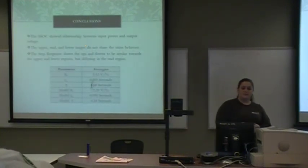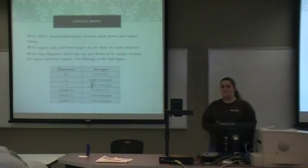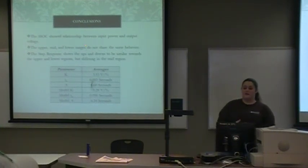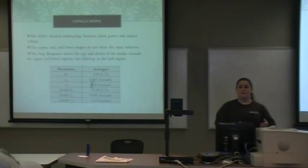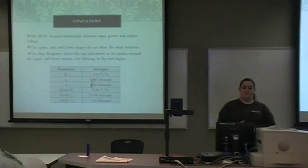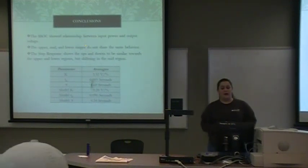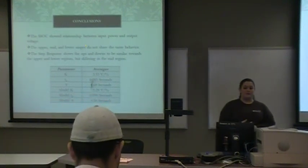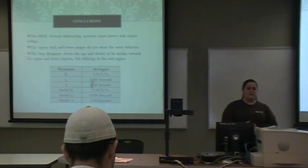In conclusion, the SSOC showed the relationship between power input and voltage output, with upper, middle, and lower ranges that do not share the same behavior. The step response shows up and down steps that are similar within regions but different in the middle range. The experimental average K was 0.35 volts per percent input, TD was 0.085 seconds, and tau was 0.68 seconds. The model average K was 30.28 volts per percent input, TD was 0.096 seconds, and tau was 0.34 seconds. Thank you.